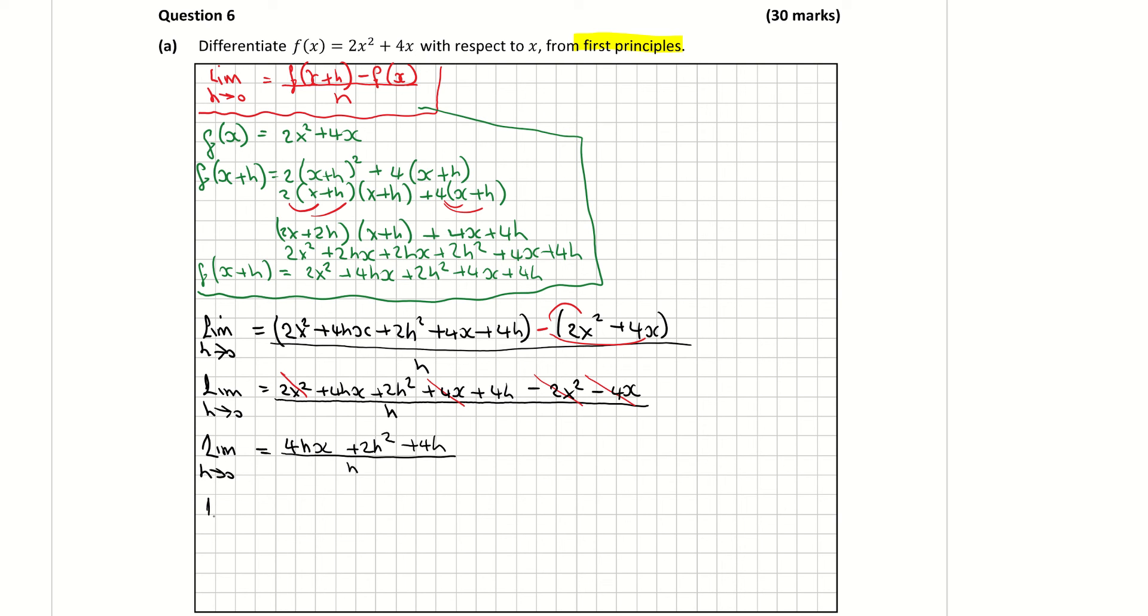I now need to divide the top line by h. So one way of looking at it is maybe if you want to factorize out h from the top line. So if I factorize out the h, it'll be h times 4x plus 2h because h by 2h is 2h squared plus 4. And that's divisible by h and then the h's will cancel. So that's leaving me with the limit as h approaches 0 is equal to 4x plus 2h plus 4.